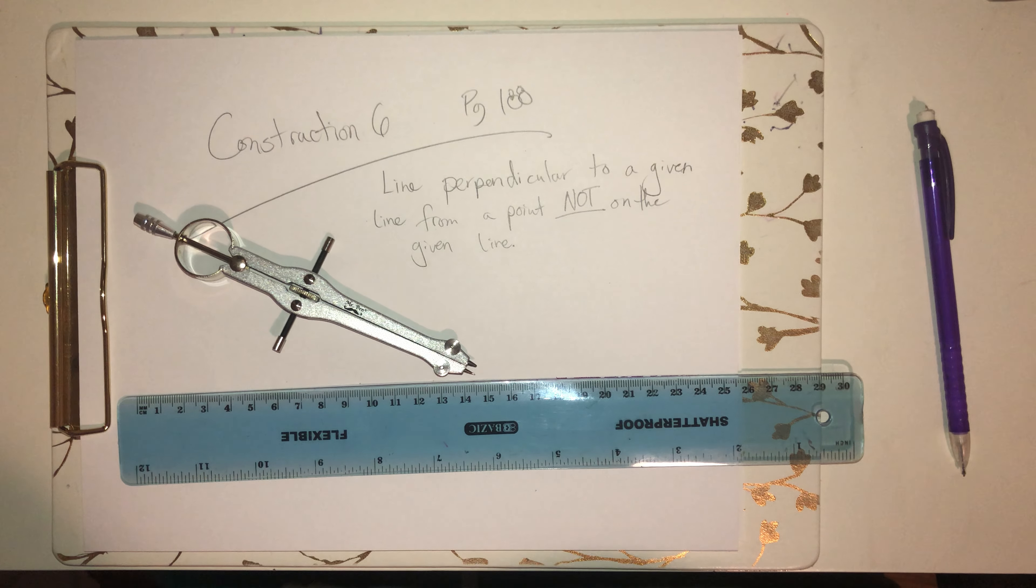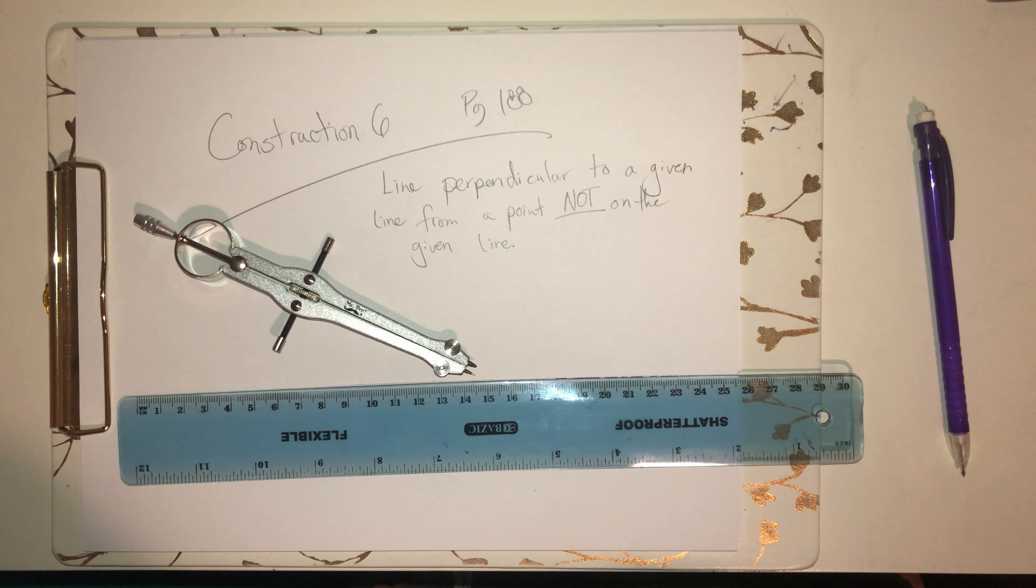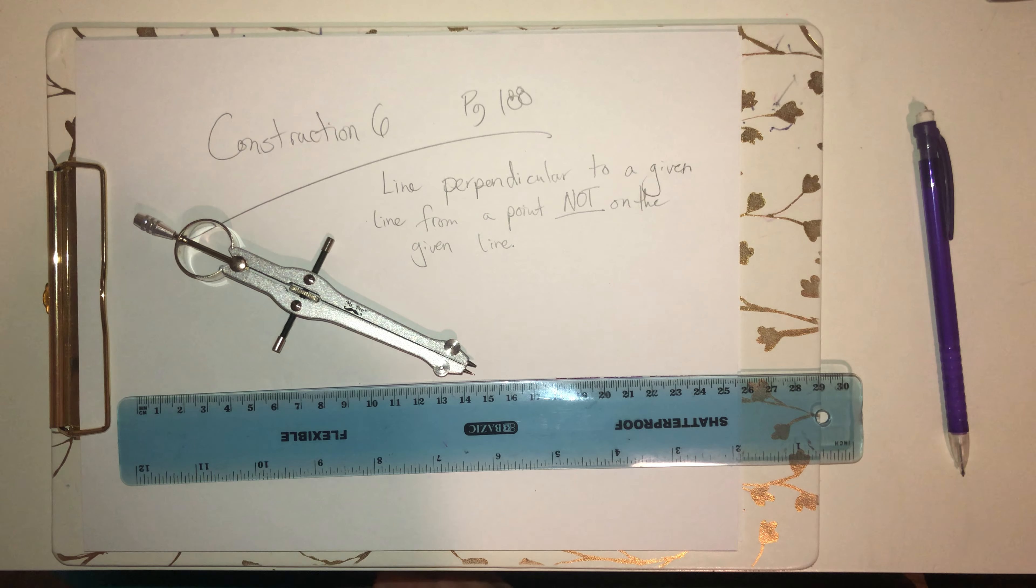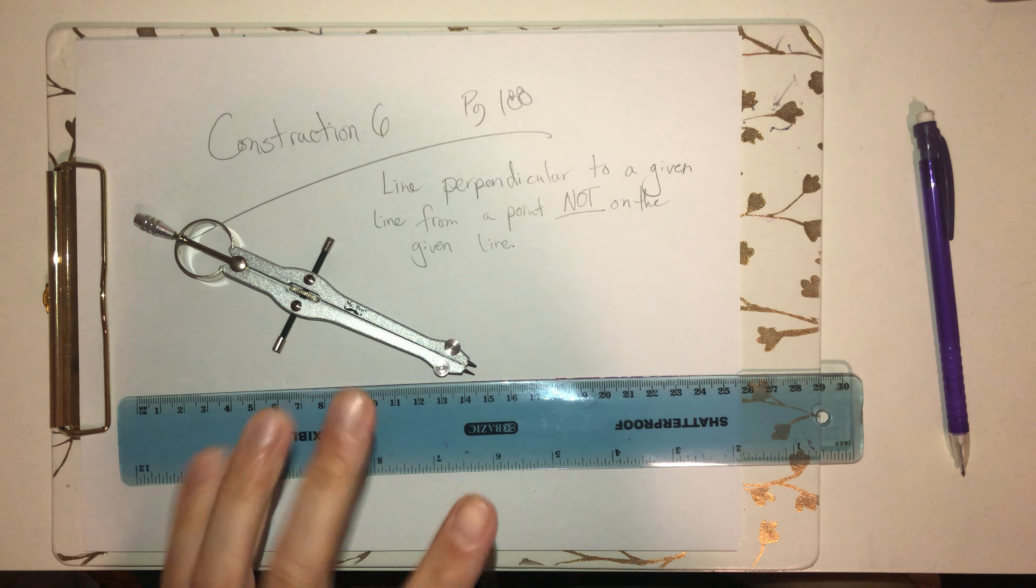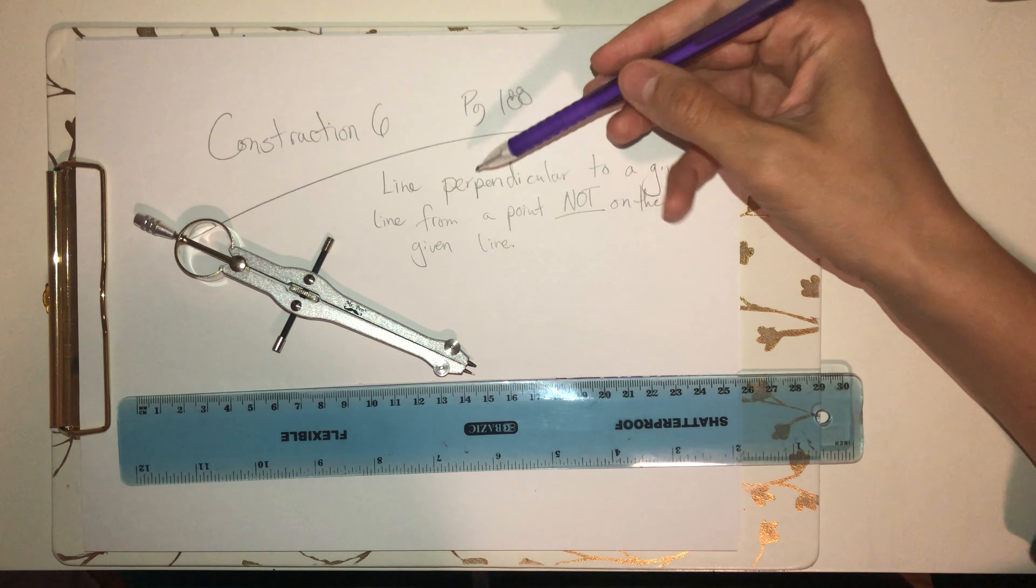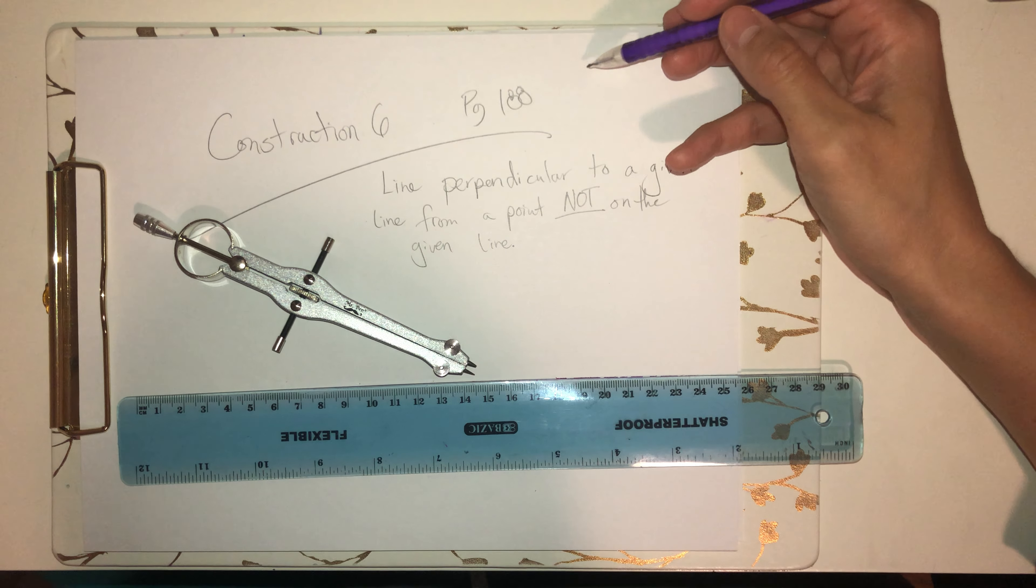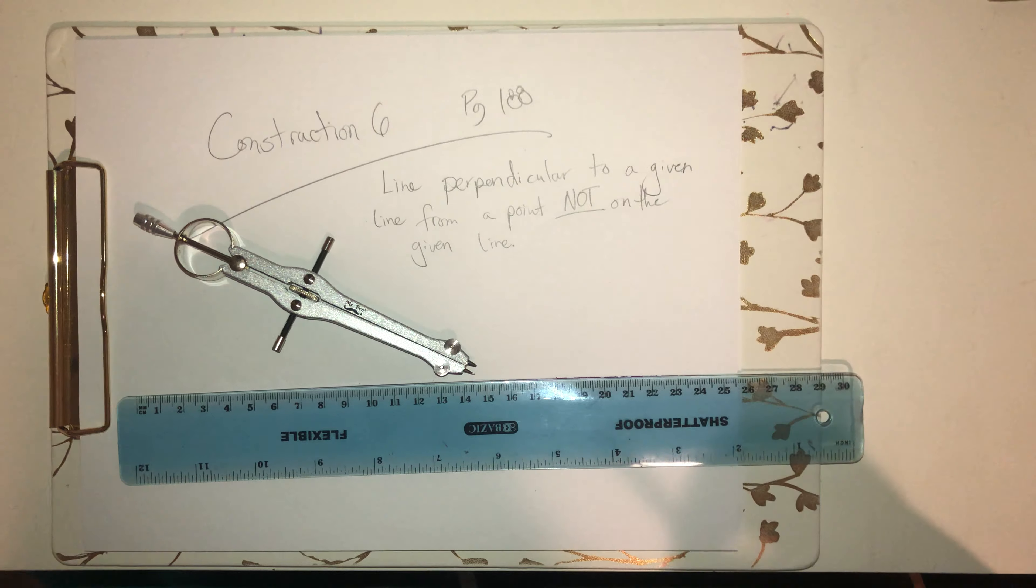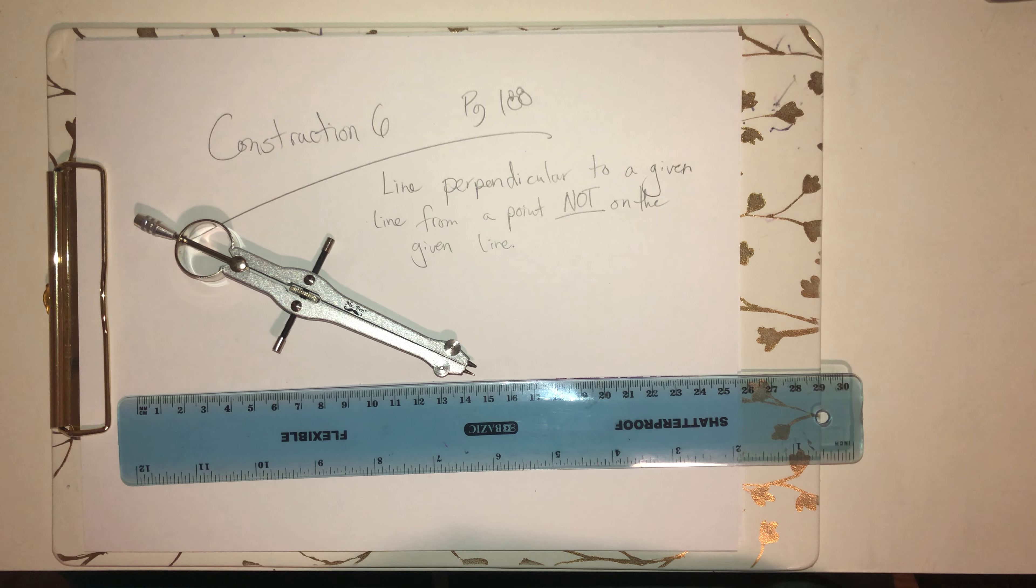We're on page 188, one of the first things happening in section 4.1. In general, construction 6, which will be a perpendicular line. I know what you're thinking - didn't we just do this for construction 5? Kind of, but we're going to have our perpendicular line that we construct going to be from a point not on the given line. That's going to be the distinction that we make here.